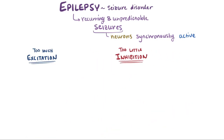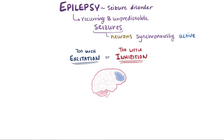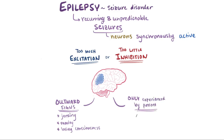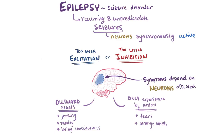Whether it's a decrease in inhibition or an increase in activation, when groups of neurons start firing simultaneously over and over, it's often noticed by others as obvious outward signs like jerking, moving, and losing consciousness, but can also be subjective experiences only noticed by the person experiencing it, like fears or strange smells. It all depends on which neurons in the brain are affected.